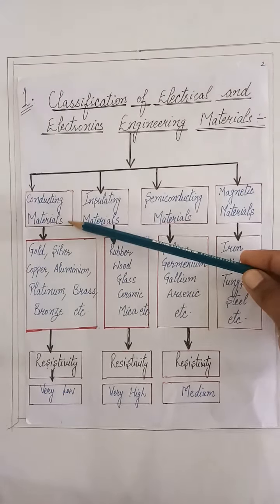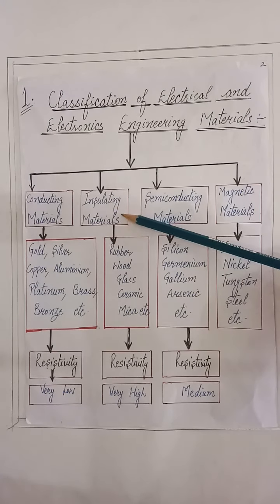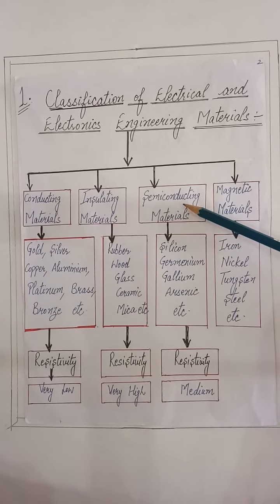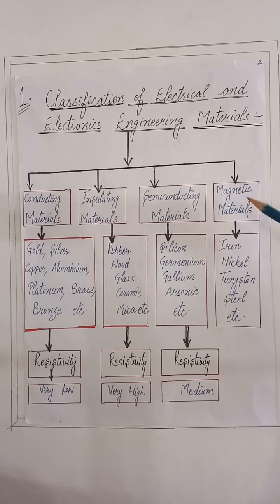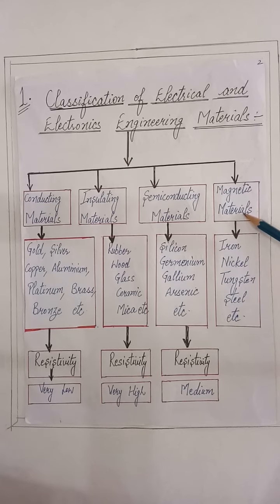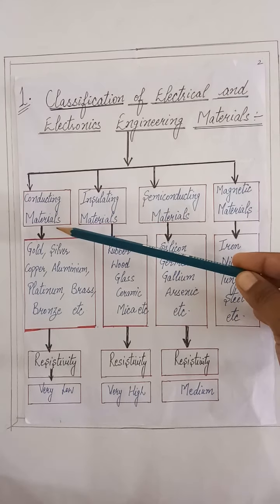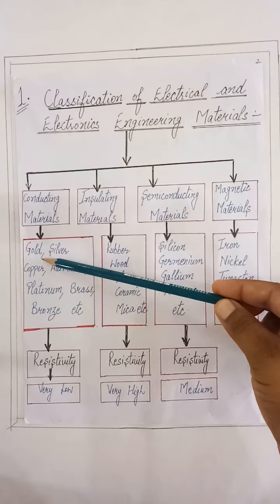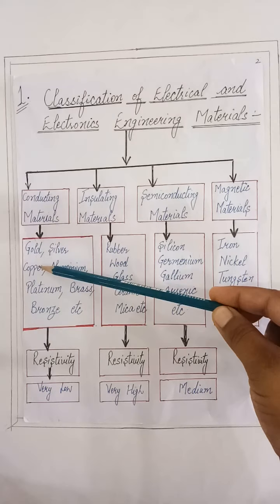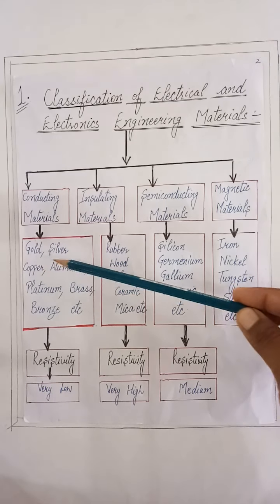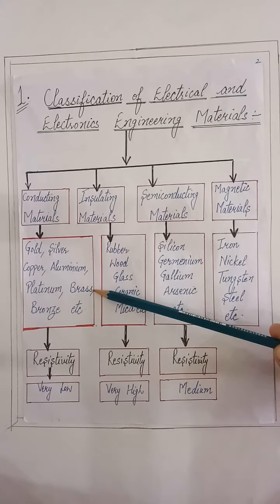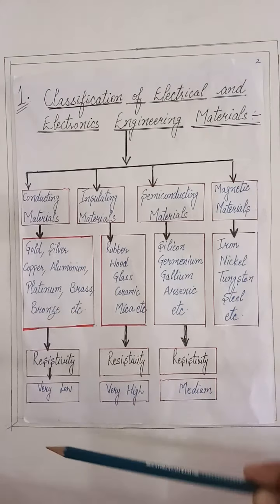First is the conducting material, second is insulating materials, third is the semiconducting materials, and fourth is the magnetic materials. Conducting materials examples such as gold, silver, copper, aluminium, platinum, brass, bronze, etc.